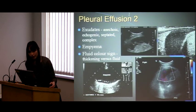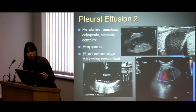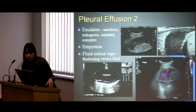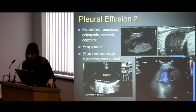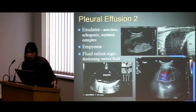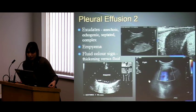Exudates can be black, but if you see features like septation, complex debris, or echogenic fluid, it's probably not a simple pleural effusion — start thinking about whether there's something more going on, like an empyema. In this picture you can see wavy fibrinous bits, so that's septated. For empyema, you get thickening of the wall — a thick wall around the black fluid area — and lung behind it.